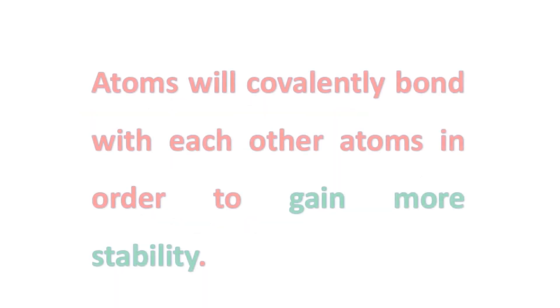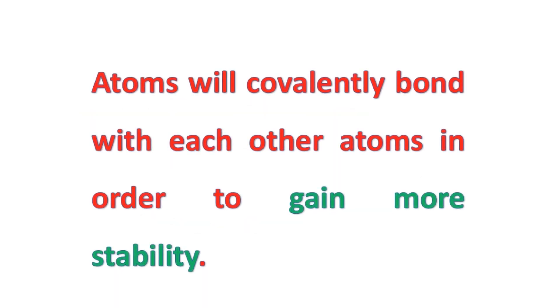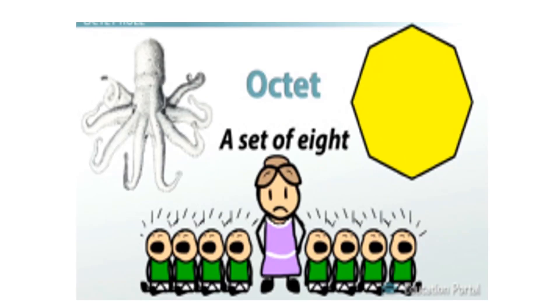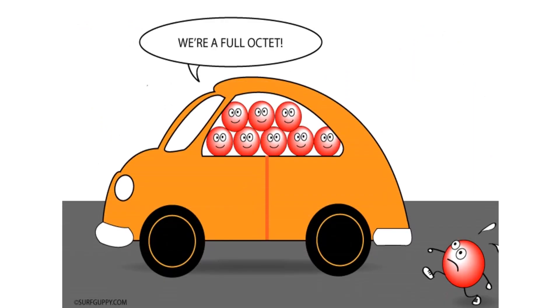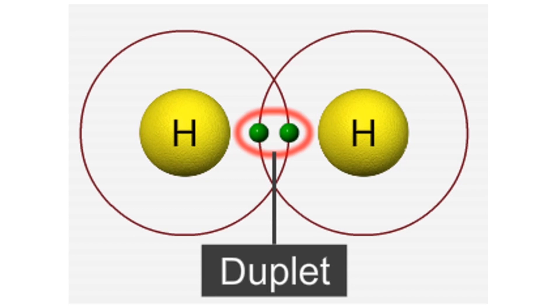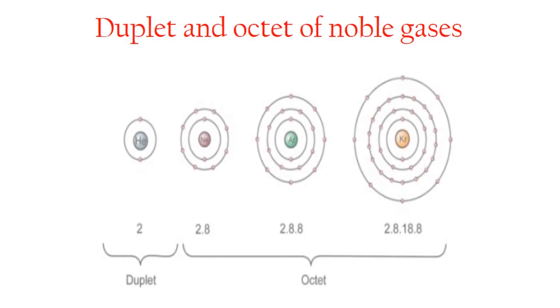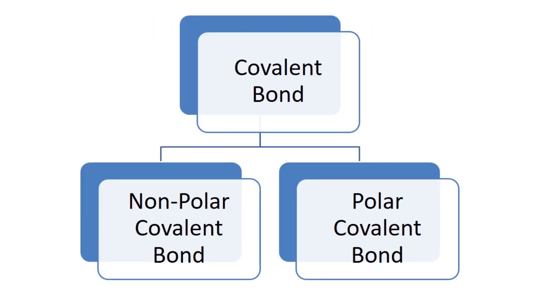Atoms will covalently bond with each other in order to gain more stability. The stability attains as outermost shell of an atom has a complete octet or duplet in case of hydrogen, namely noble gas configuration. There are two types of covalent bond: one is non-polar covalent bond, another one is polar covalent bond.